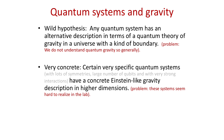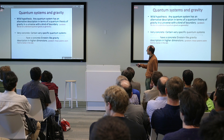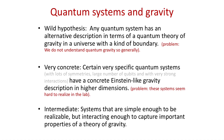There is a very concrete version: certain specific quantum systems have concrete Einstein-like gravity descriptions. So you can start with a very concrete quantum system, and it will behave as if it were a theory of Einstein gravity in higher dimensions. The caveat is that these are systems with lots of symmetries, very large number of qubits, very strong interactions—very difficult probably to make in the lab. But there's something intermediate: systems that are simple enough to be realizable and interacting enough to capture some important properties of a theory of gravity.